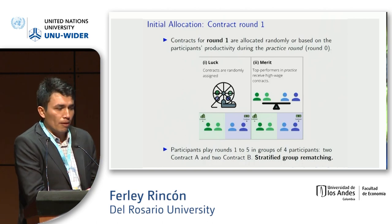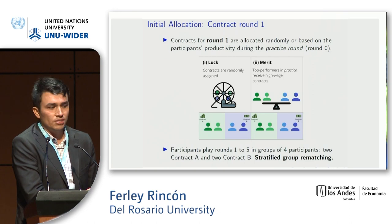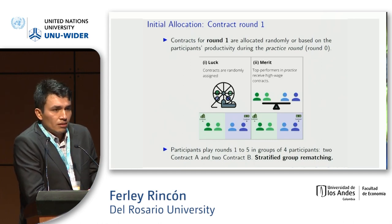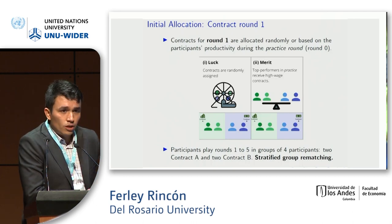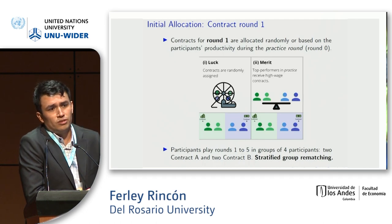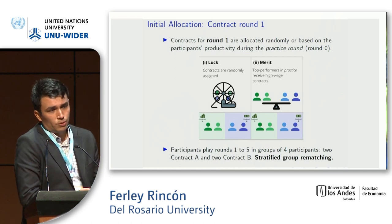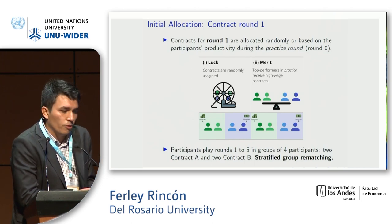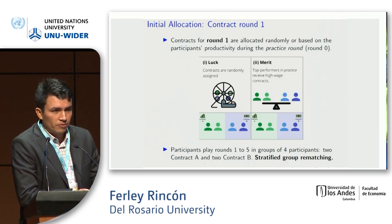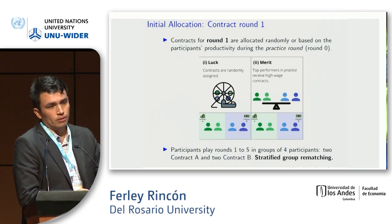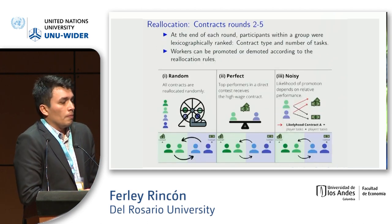Contracts for round one are allocated randomly or based on participant productivity during the practice round. In the lag treatment, contract A and B are assigned randomly to participants. In the merit condition, participants after the practice round are sorted by their productivity — those with the best productivity receive contract A, the high-payment contract, and those with lowest productivity receive contract B. We then organize groups of four players, two with contract A and two with contract B, using stratified group rematching to ensure groups are always composed this way.